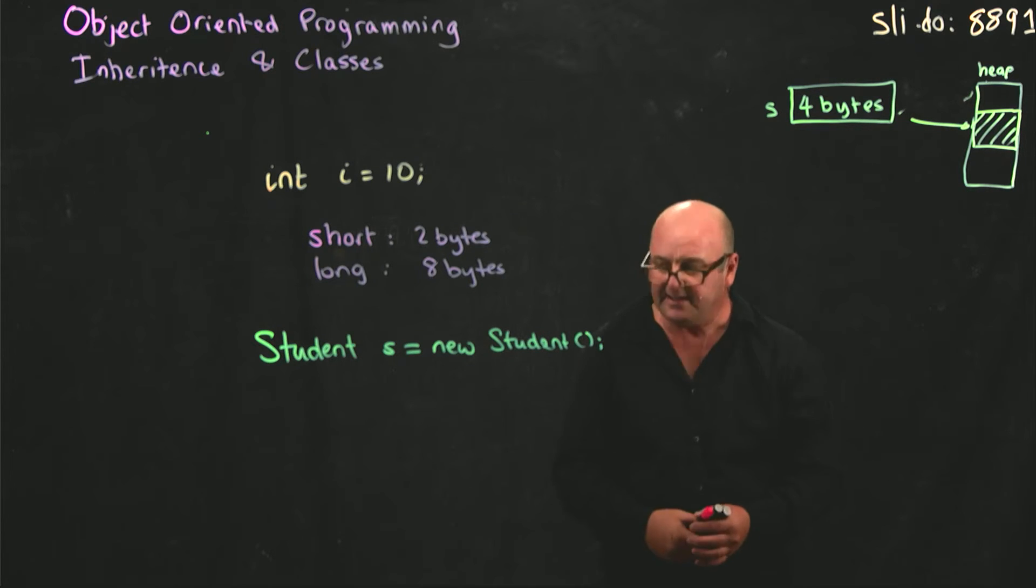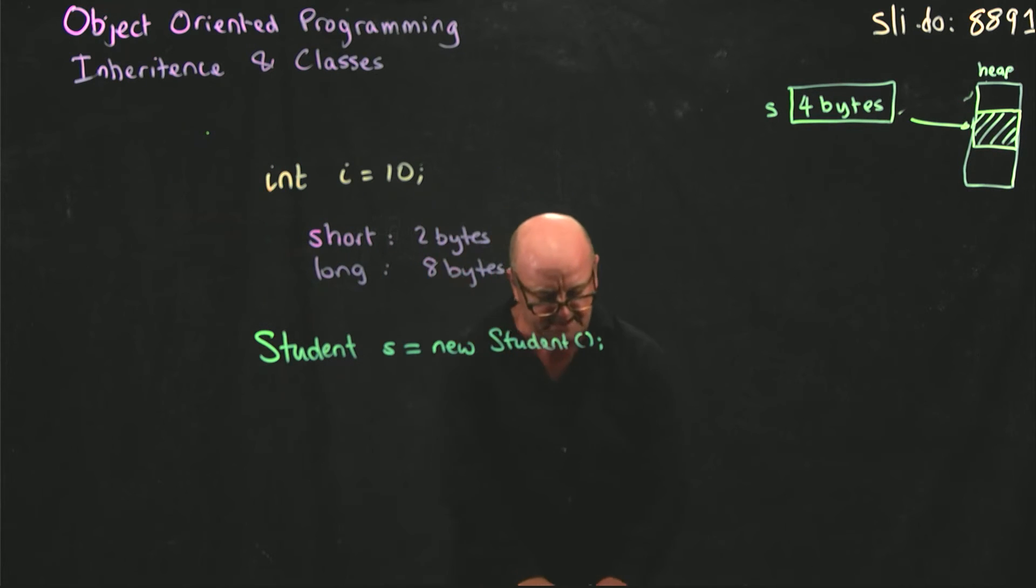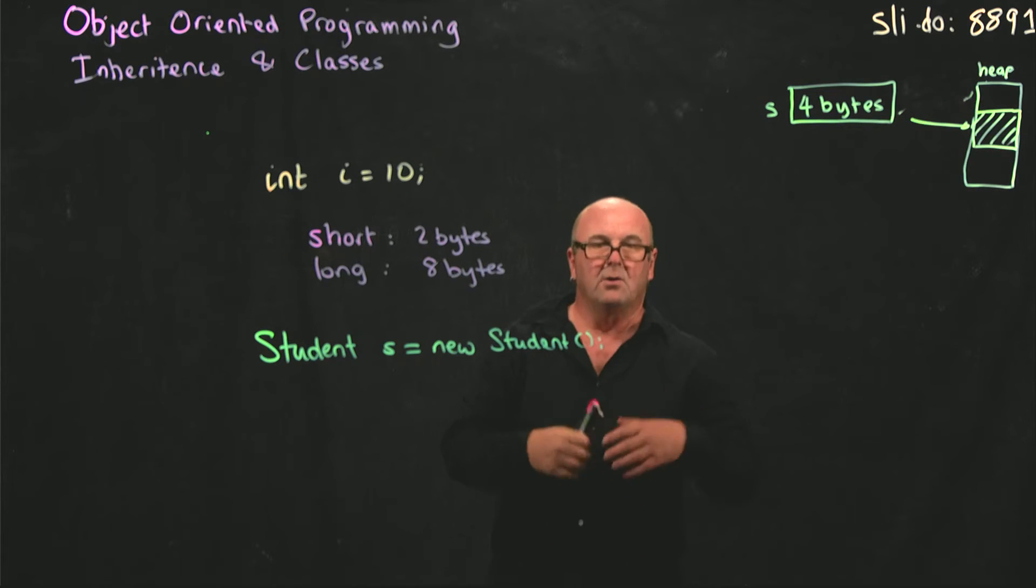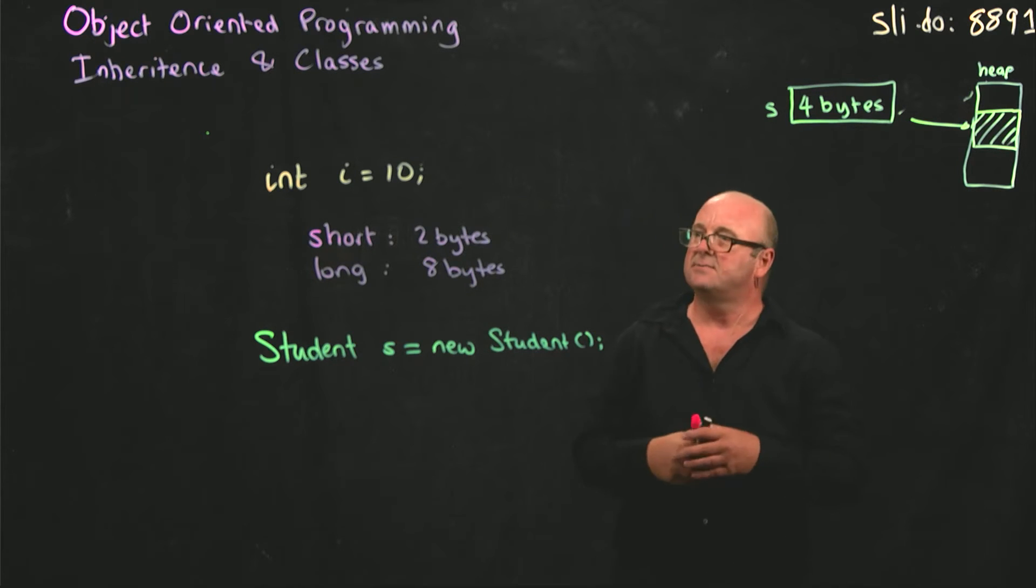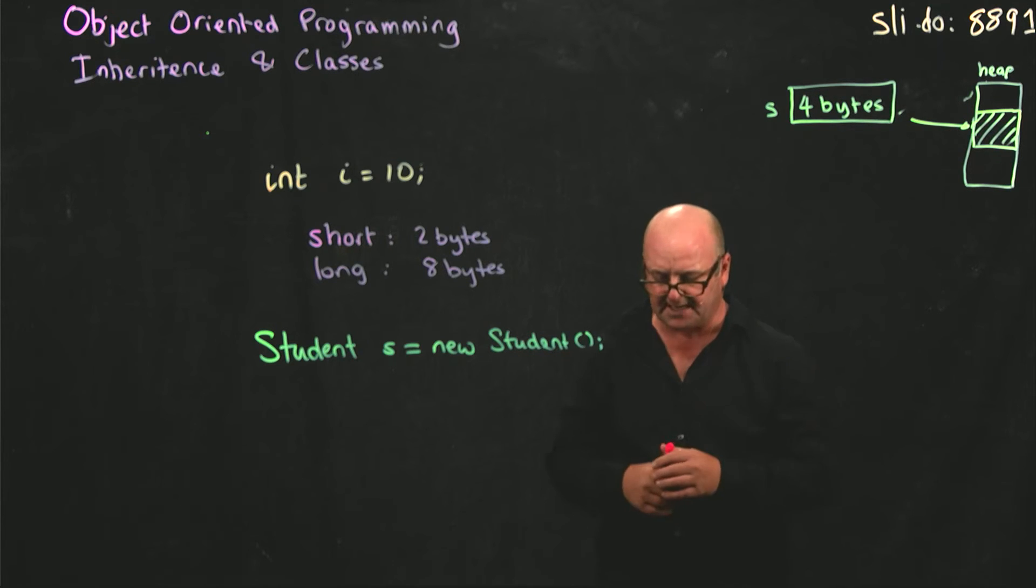And the way that it does that is through inheritance. So the JVM looks at what this student object is, what it's inheriting from, where it came from, to figure out how much space on the heap to allocate.